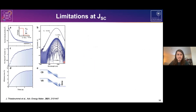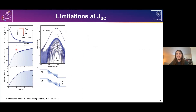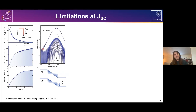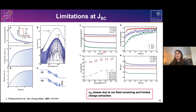Regarding JSC losses, I refer to a recent publication — I think she presented in this same series a couple of months ago — which investigated lead-tin perovskite and monitored the evolution of JSC over time in the first few seconds. They found that due to internal ion redistribution in the perovskite, we end up with internal field screening, limiting charge extraction after a few seconds and causing JSC decay. They also showed this is a universal process for different perovskite types, including our 1.8 eV material. So JSC can be limited by ion screening of the internal field and limited charge extraction.